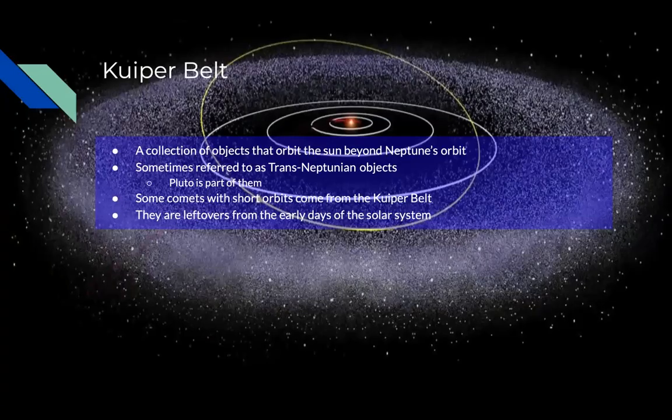The Kuiper belt is a bunch of objects that orbit the sun beyond Neptune's orbit. Because they orbit the sun beyond Neptune's orbit, they're referred to as trans-Neptunian objects. And Pluto is part of them.